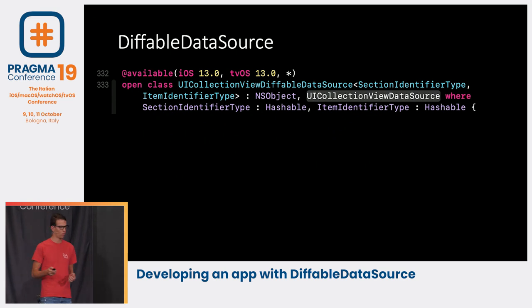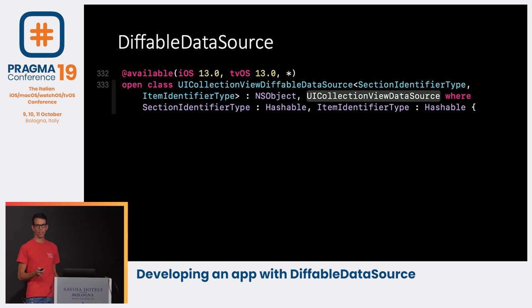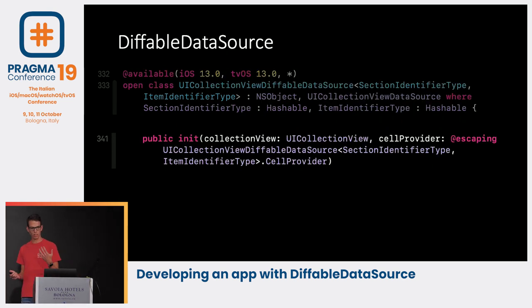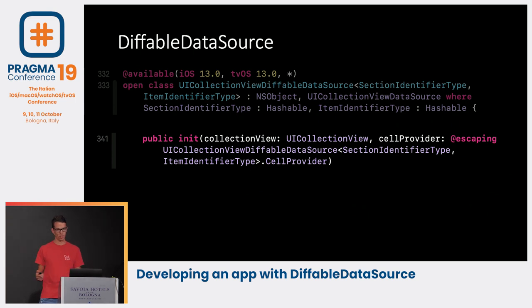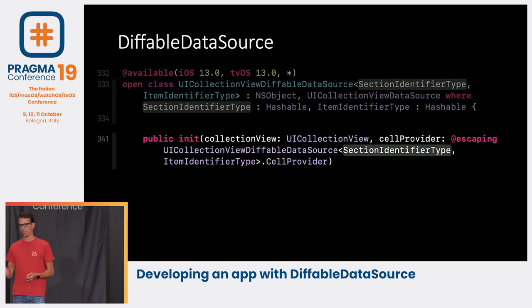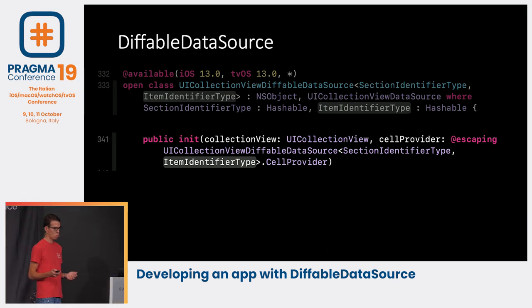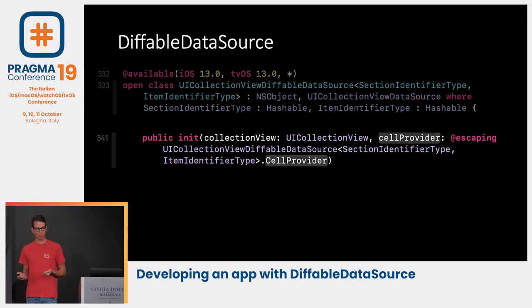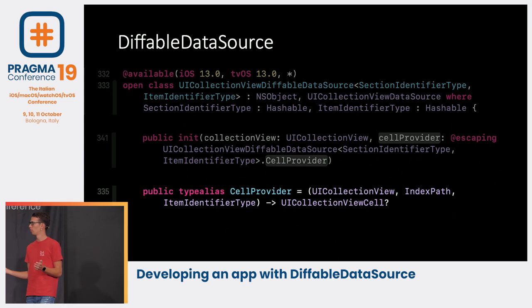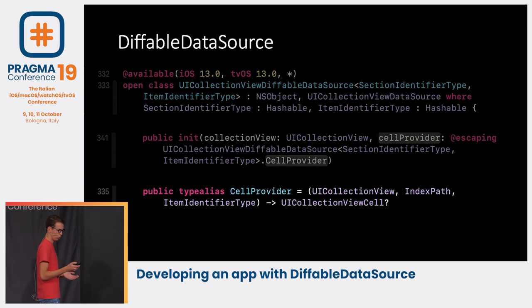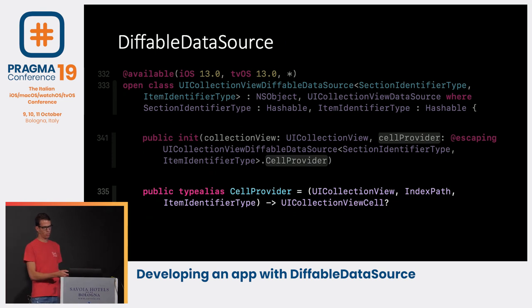It can remove a lot of boilerplate. Looking at the initializer, we need a collection view and an escaping closure — the cell provider — which is a type alias of a tuple containing a collection view, an index path, and your ItemIdentifierType generic. What this means is that when we specify our generic type, this closure will give us the specified model directly. So Apple will always give us the right type.